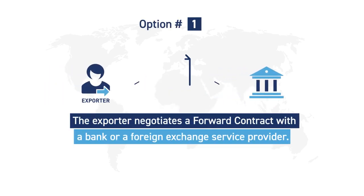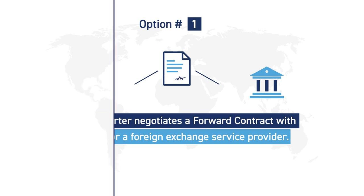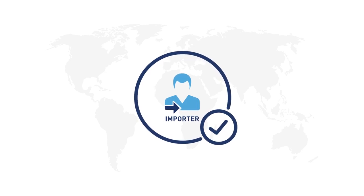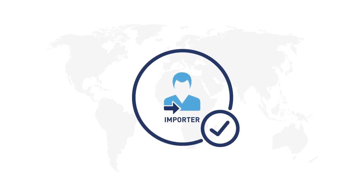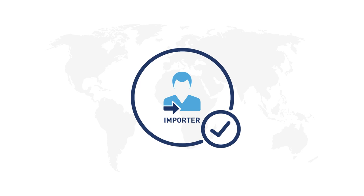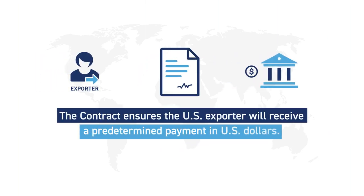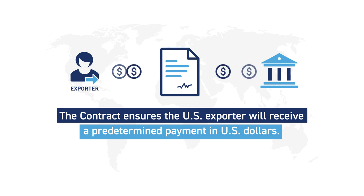Option number one: the exporter negotiates a forward contract with a bank or foreign exchange service provider. If the importer is creditworthy or an established customer, this is the most direct and common method. The contract ensures the U.S. exporter will receive a predetermined payment in U.S. dollars at a future date, regardless of fluctuating exchange rates.